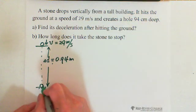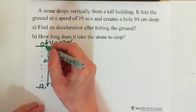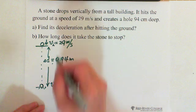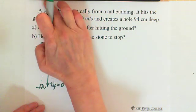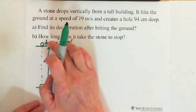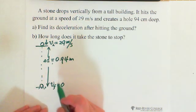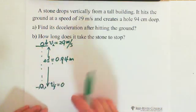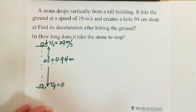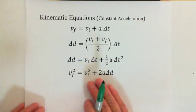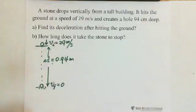At the end of the 94 centimeters, the stone stops, so final velocity equals zero. The displacement delta-d is 94 centimeters, which we convert to 0.94 meters. We are analyzing the motion after hitting the ground — from when it enters the ground at 29 m/s to when it stops. We have initial velocity, final velocity, and displacement, so we can use the formula v_f² = v_i² + 2aΔd.